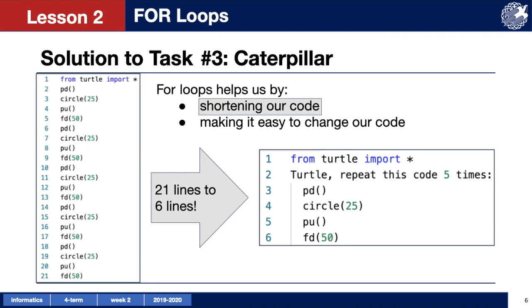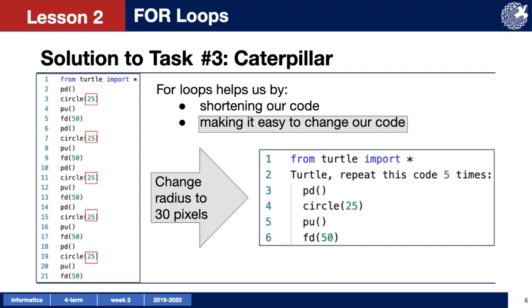Using this code will shorten our program from 20 lines of code to 6 lines. One of the other benefits of using a loop is that it becomes much easier to change our code when needed. What if we wanted to make a fatter caterpillar where each circle had a radius of 30 pixels? Using our initial code we must fix 5 lines of code. In our looped code fixing one line is enough.